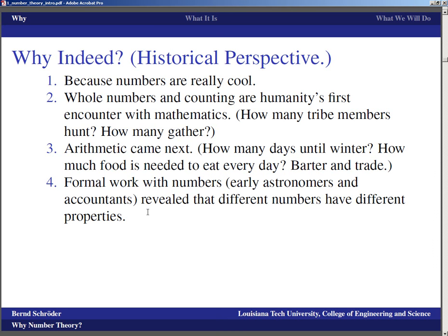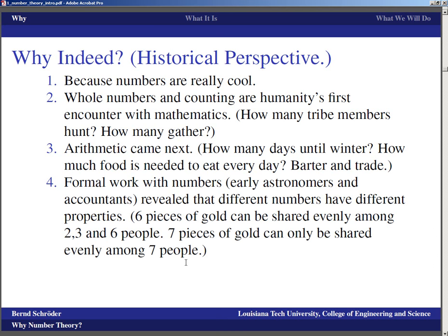This form of work with numbers also revealed that different numbers have different properties. For example, six pieces of gold can be shared evenly among two, three, and six people, whereas seven pieces of gold can only be shared evenly among seven people. Now that is not something that people are terribly concerned with. If you've got seven pieces of gold to share among six people, you take that last piece, take an axe, and cut it into as many small pieces as you need.